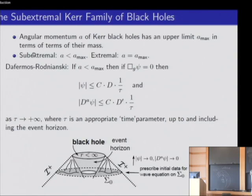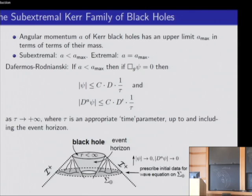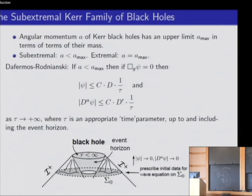For black holes for which the angular momentum is not the maximum — the sub-extremal case — Dafermos and Rodnianski proved that if you have a solution to the wave equation on such black holes, then psi and all its derivatives decay like 1 over t^3, where t is a time parameter going to infinity. So these quantities go to zero, and we obtain quantitative decay estimates for psi in the sub-extremal case.